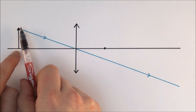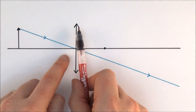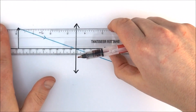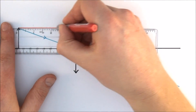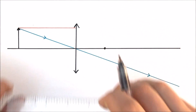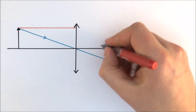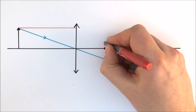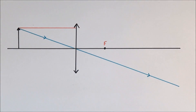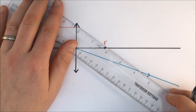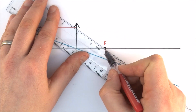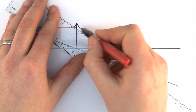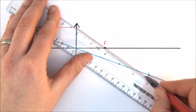The other ray of light I'm going to think about travels parallel to the principal axis. Any rays of light traveling in a parallel line all converge at the focal point, which I've marked with a dot. So I'm going to continue that ray from through the lens, through the focal point, and just keep it going.